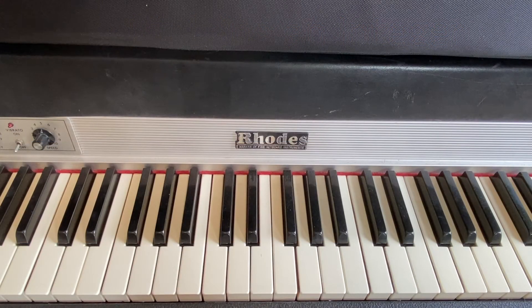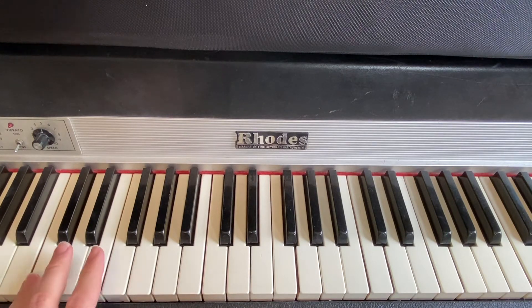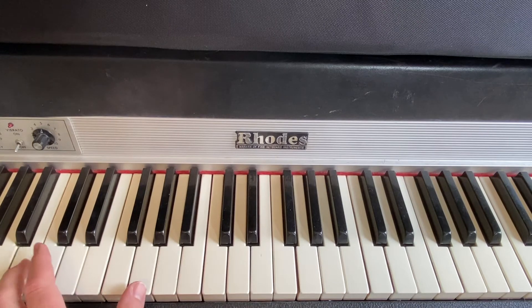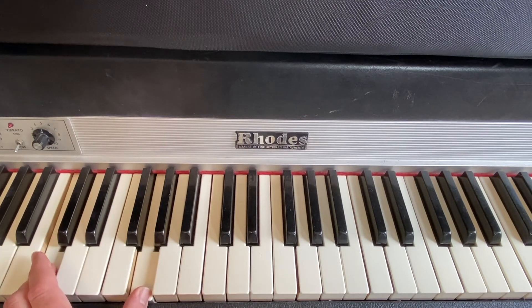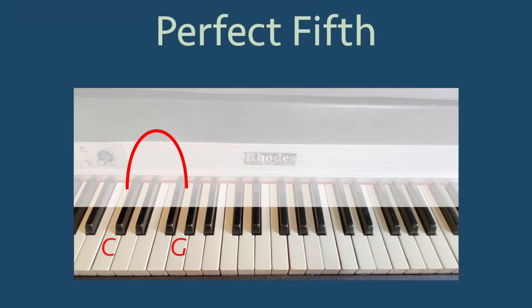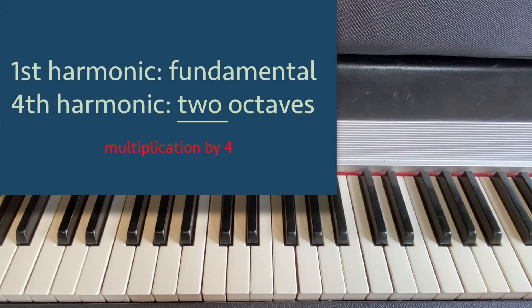So when we start at our fundamental note C and hear the G that is in the space of one octave — meaning between C and C prime — we have essentially just heard multiplication by three halves. The space between the notes C and G is called a perfect fifth. And this leads us to our next example. This time, let's start at the note G, that's the perfect fifth of our fundamental C.